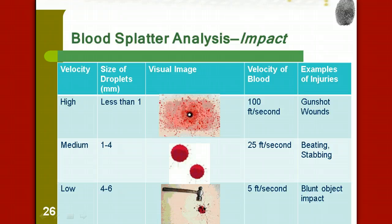When we look at the impact as a result of some of that spray or splatter, we can sometimes determine the velocity of the impact. High velocity is where the size of the droplets are literally less than a millimeter, and the blood is traveling at 100 feet per second. That's typically going to be because of a gunshot wound. A medium velocity, the size of the droplets is going to be anywhere from one to four millimeters, traveling at about 25 feet per second. An example would be beating or stabbing.